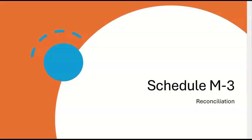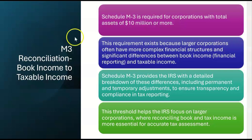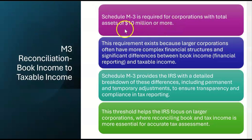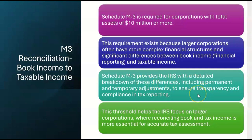The exam is also going to expect you to know something about an M-3 reconciliation. M-3 is like the M-1 reconciliation, but M-3 is required for corporations with total assets of $10 million or more. The M-3 requirement exists because larger corporations often have more complex financial structures and significant differences between book income and taxable income. Schedule M-3 provides the IRS with a more detailed breakdown of these differences, including permanent and temporary adjustments to ensure transparency and compliance in tax reporting.